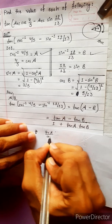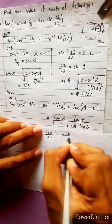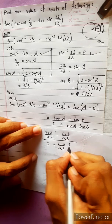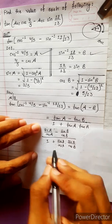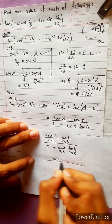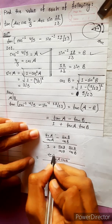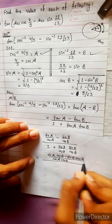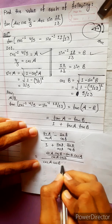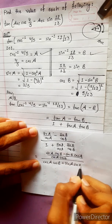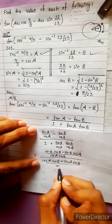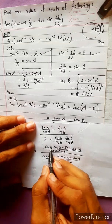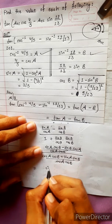We don't have values in terms of tan, so we simplify: tan a means sin a over cos a, minus sin b over cos b, all divided by 1 plus tan a times tan b. Taking LCM of cos a and cos b in the numerator: sin a cos b minus sin b cos a, over cos a cos b. The denominator becomes cos a cos b plus sin a sin b, over cos a cos b. The cos a cos b cancels.